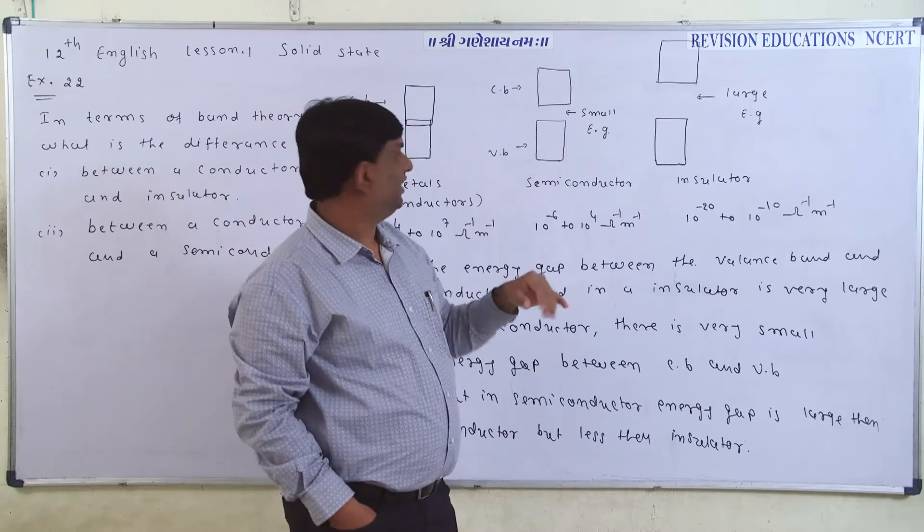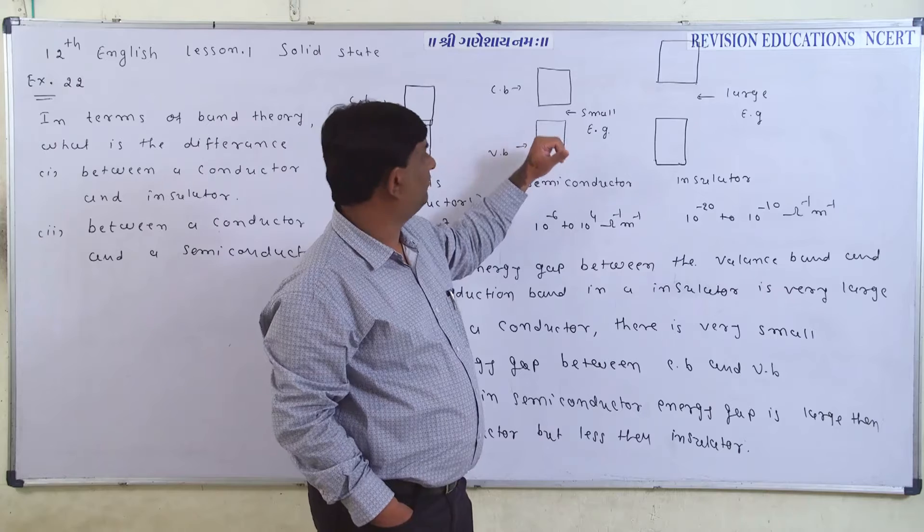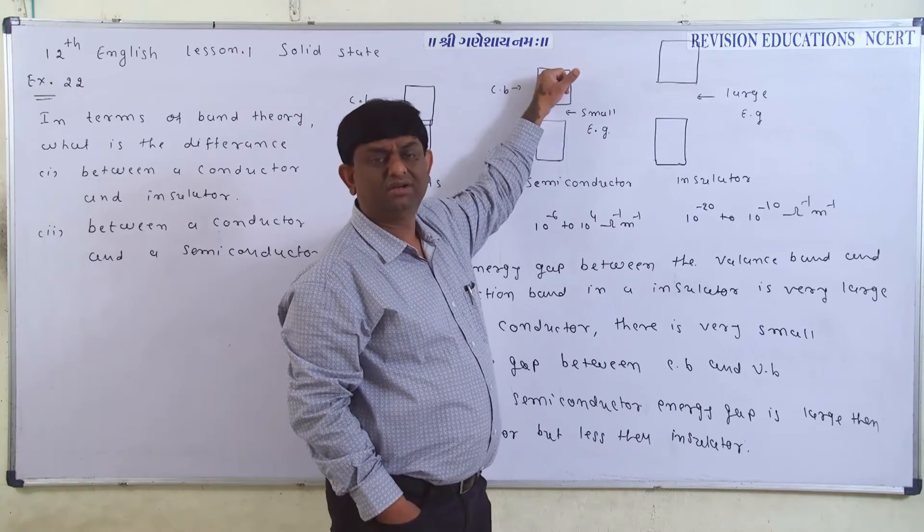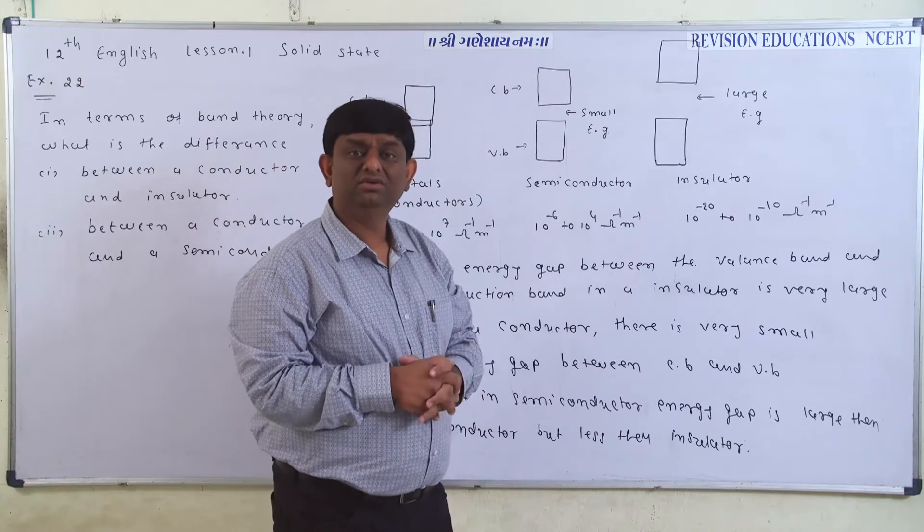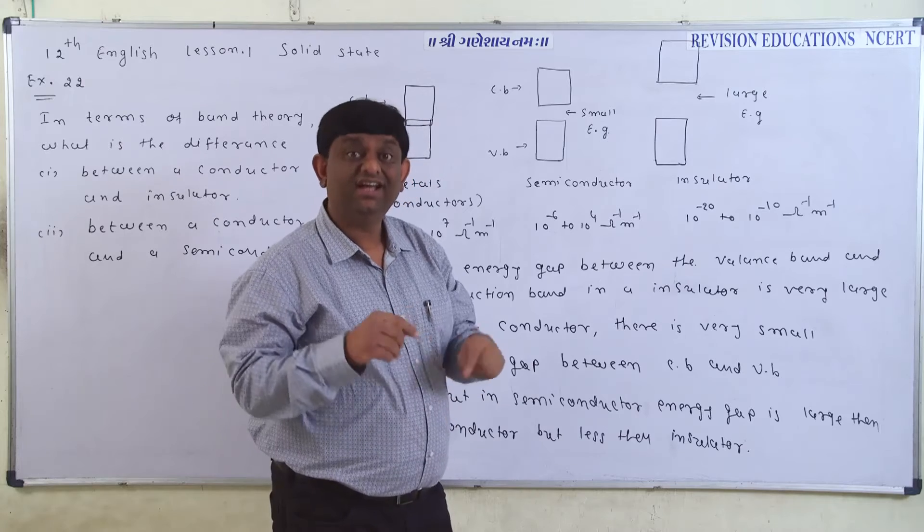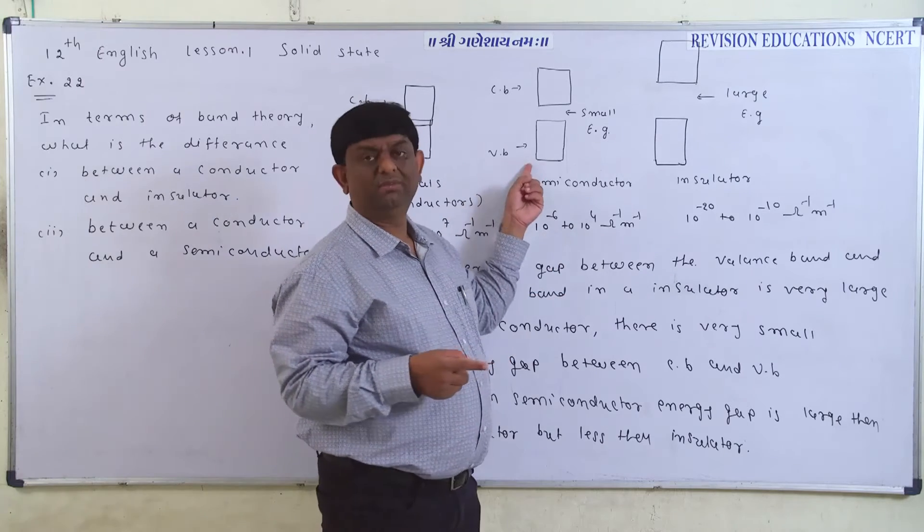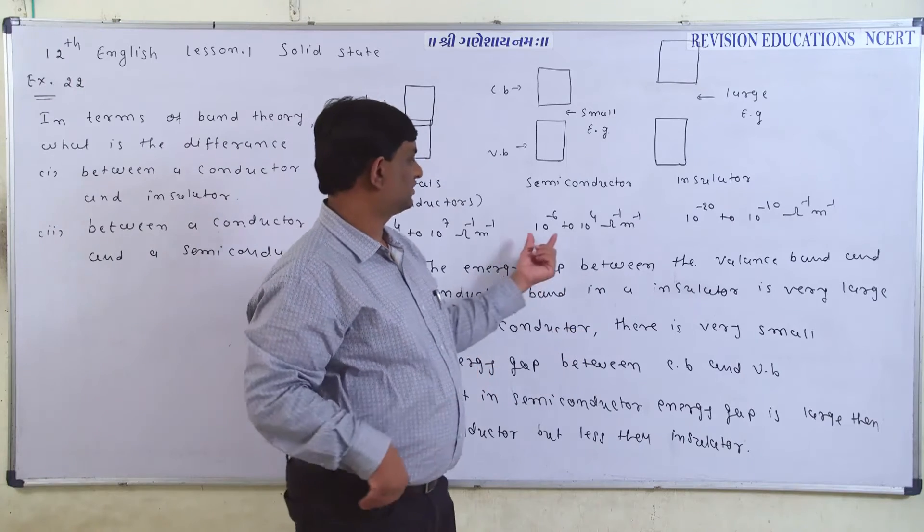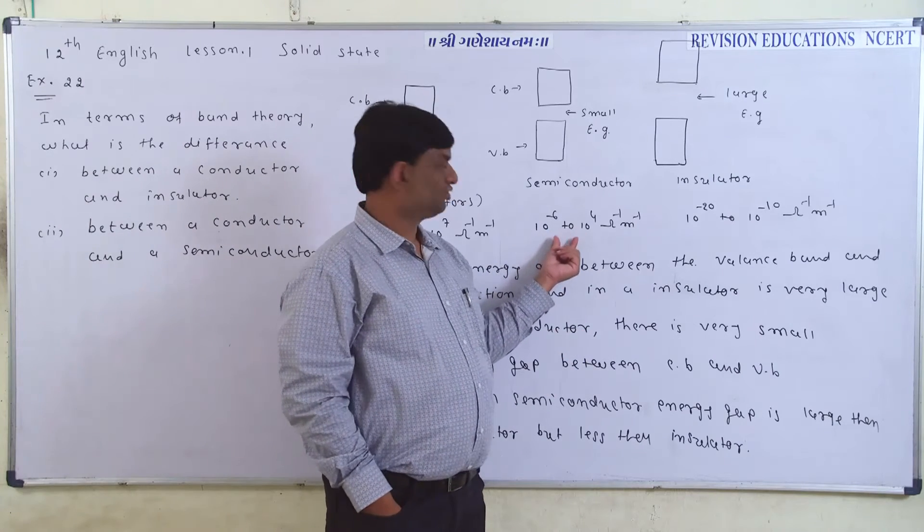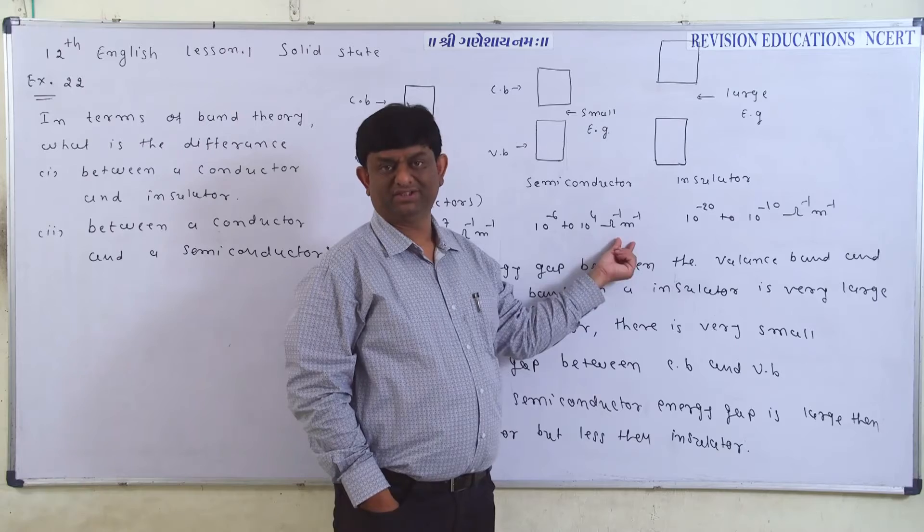But when it comes to low temperature, the electron can easily jump from valence band to Conductor Band. And they are able to conduct the electricity at high temperature. So, the value is 10 to the minus 6 to 10 to the 4, ohm-inverse, meter-inverse.